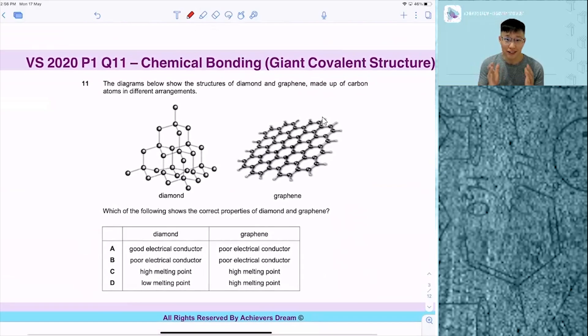Let's take a look at question number 11. The topic tested here is on chemical bonding for pure chemistry students, testing your understanding of giant covalent structures.